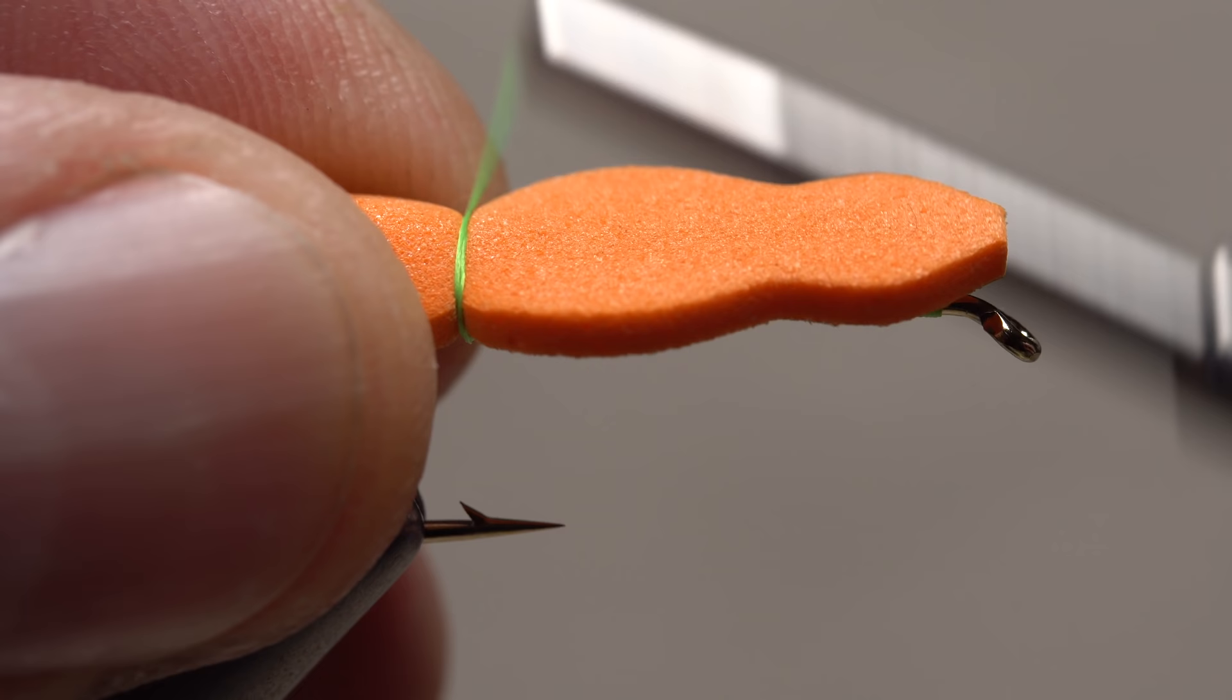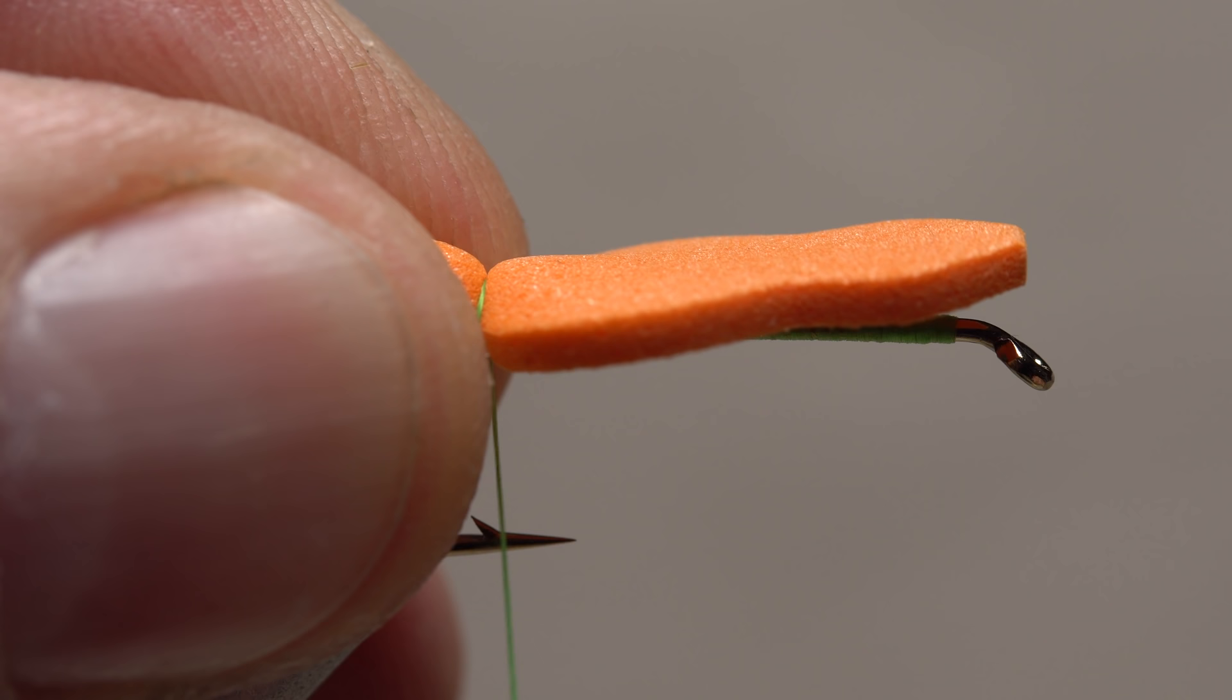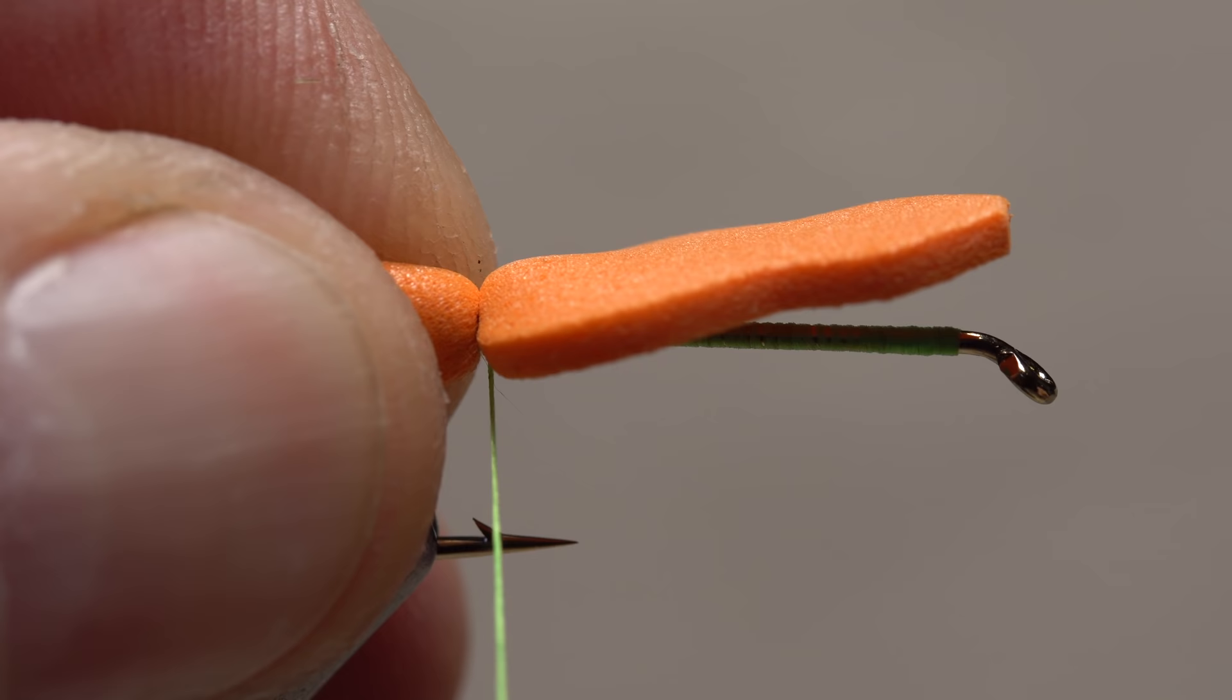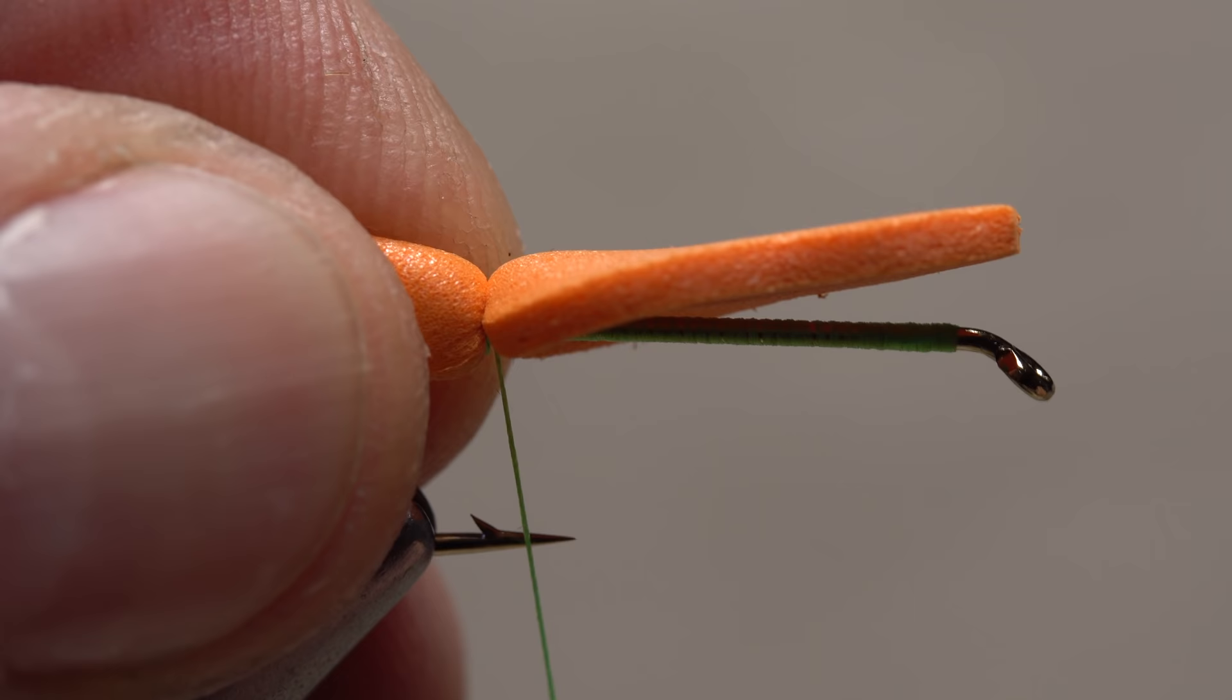To actually attach the foam to the hook, I like to correctly position it, then take two loose wraps of tying thread, squeeze and compress the foam in my fingertips, then pull tight on my tying thread to close the two prior turns down and secure the foam. I'll then add a few more tight wraps as insurance.